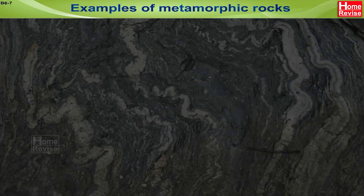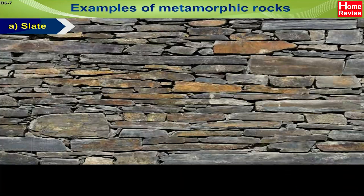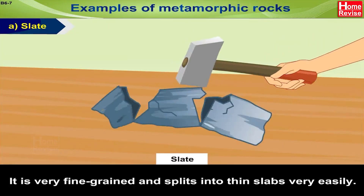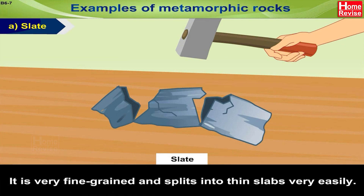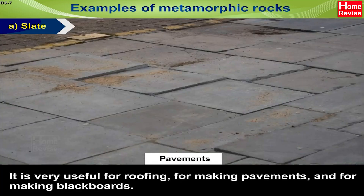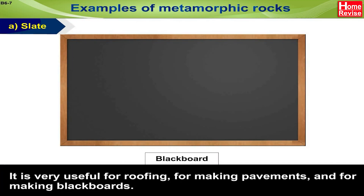Examples of metamorphic rocks. A. Slate. Slate is formed from shale by the action of heat and pressure on it. It is very fine-grained and splits into thin slabs very easily. It is very useful for roofing, for making pavements and for making blackboards.